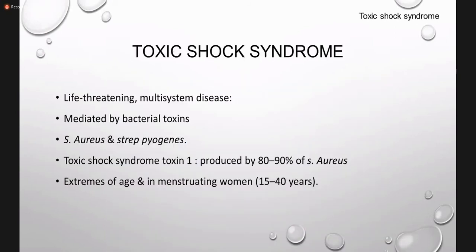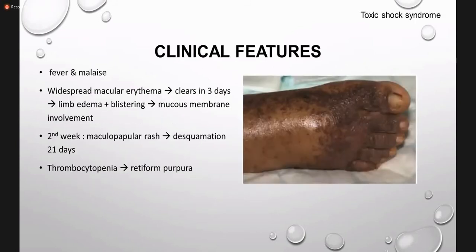The second toxin-mediated infection is toxic shock syndrome, caused by toxic shock syndrome toxin 1. The culprit bacteria are S. aureus and Streptococcus pyogenes. It is a multi-system disorder seen at extremes of age and in menstruating women using tampons. Clinically, systemic symptoms include fever, malaise, and body aches. On the skin you can see widespread macular erythema that clears in three days, along with edema and blistering of the limbs — papules, macules, and swelling of the foot as seen in the picture.